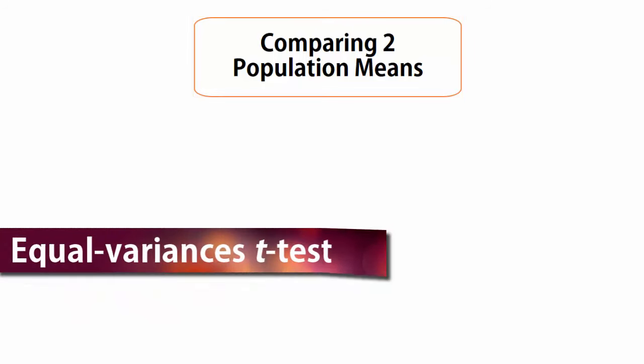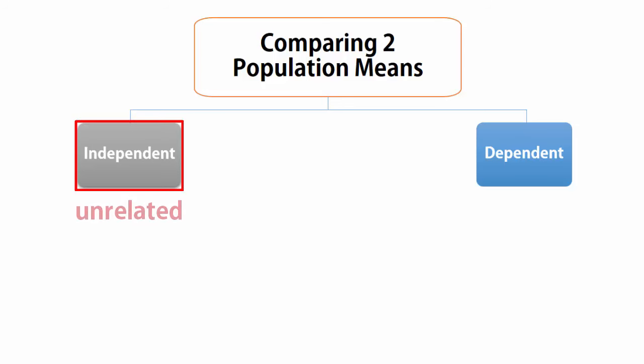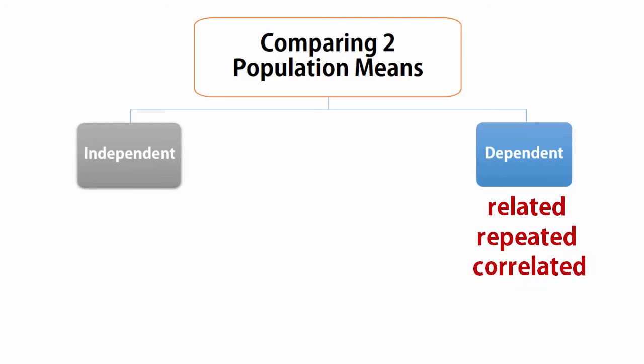Samples from two populations could either be independent, i.e. unrelated, or dependent, i.e. related, repeated, or correlated.